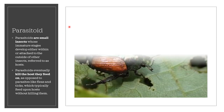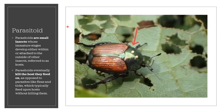An example of a parasitoid is the tachinid fly eggs. In this figure, we have the Japanese beetle, and the white spots are the tachinid fly eggs. These tachinid fly eggs can be classified as a parasitoid because when they develop into their advanced stages, they will eventually kill the host they feed on.